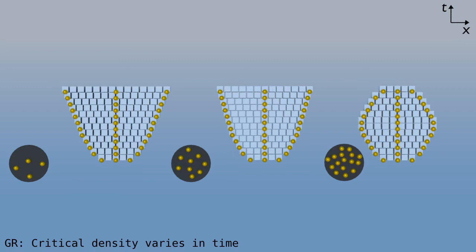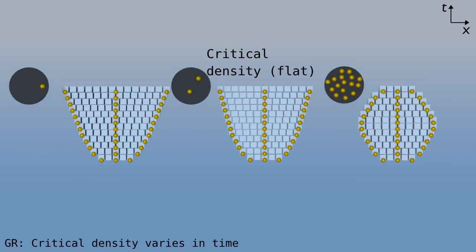Just to avoid confusion, when we compare the density for open, flat, and closed, this is the density at some given time, for example today, when the rate of expansion is some given value. As the universe expands, that density does decrease, and the critical density for a flat universe changes with size and expansion rate.